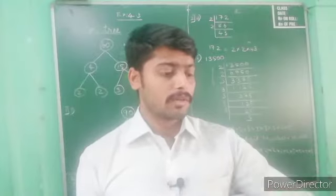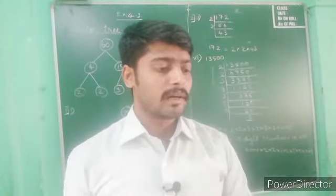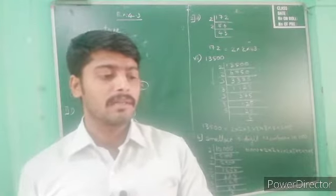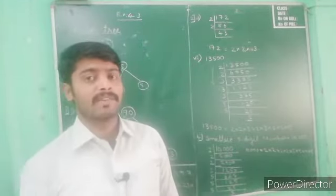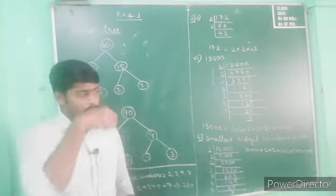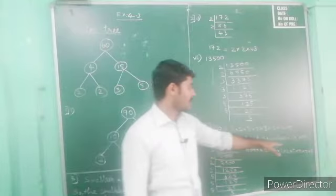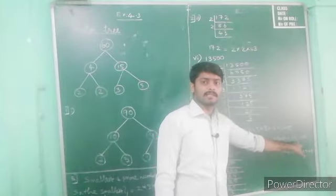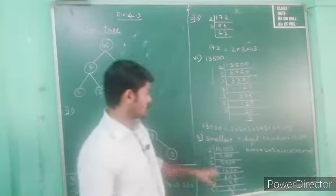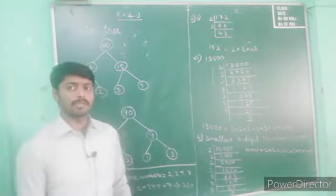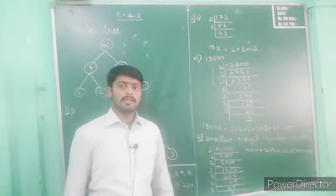Next, the fourth question in your book: write the smallest five-digit number and express it in the form of its prime factors. You know already — the smallest five-digit number is 10,000. So smallest five-digit number is 10,000. You have to find out the prime factorization for 10,000 now.